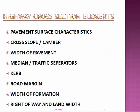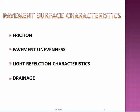The first category is highway cross-section elements. This includes all the features on the road surface — that is, the pavement surface characteristics, cross slope, width of the pavement, median, curb, road margin, width of formation, right of way, and land width.